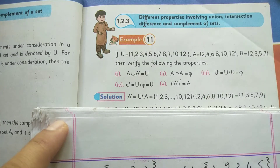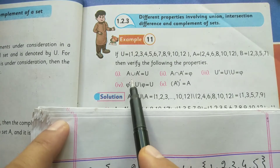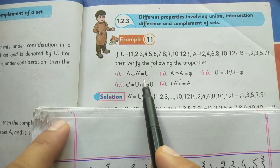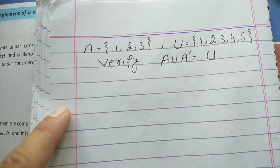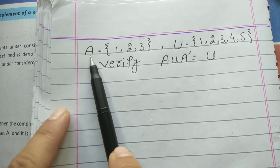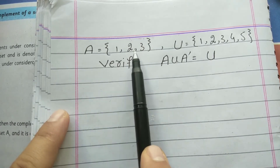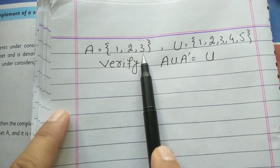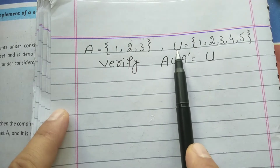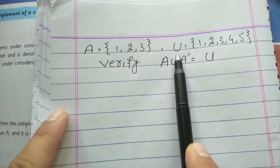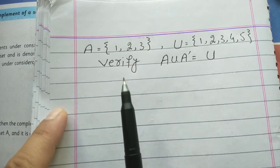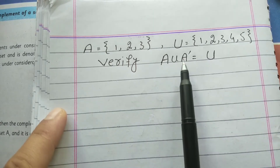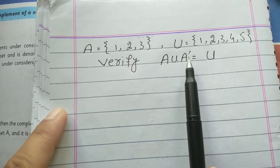Hi guys, today we will verify that A union A complement equals the universal set. So this is set A: {1, 2, 3}, and this is the universal set: {1, 2, 3, 4, 5}. Now we will verify A union A complement equals the universal set.